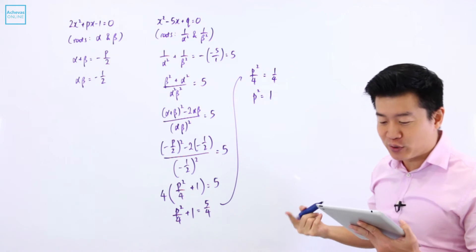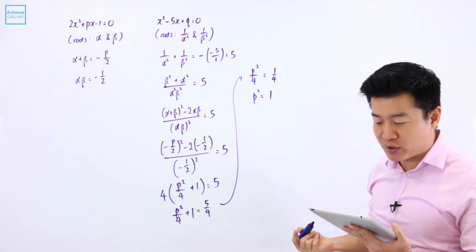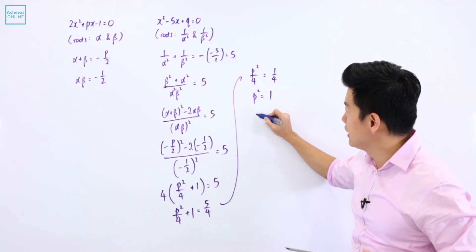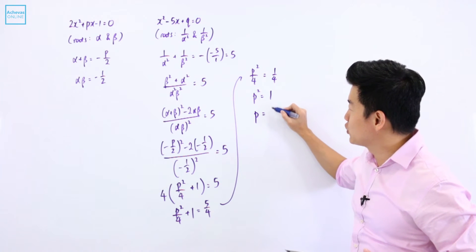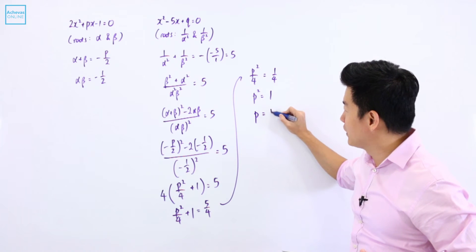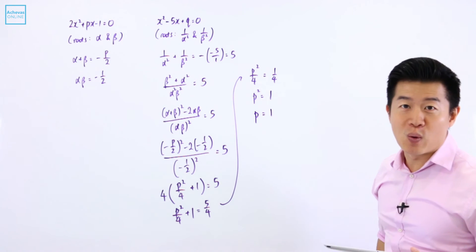And since P, according to the question, is a positive constant, so P is going to be equal to the square root of 1, which is 1.